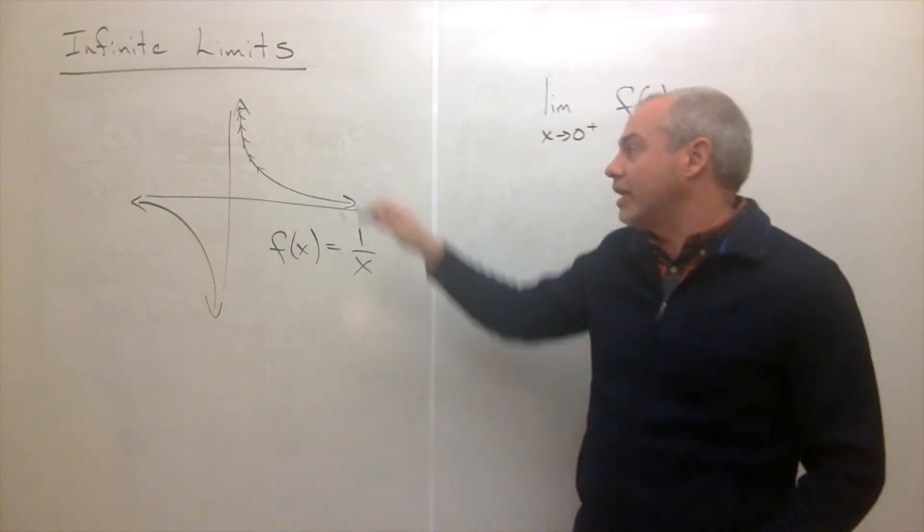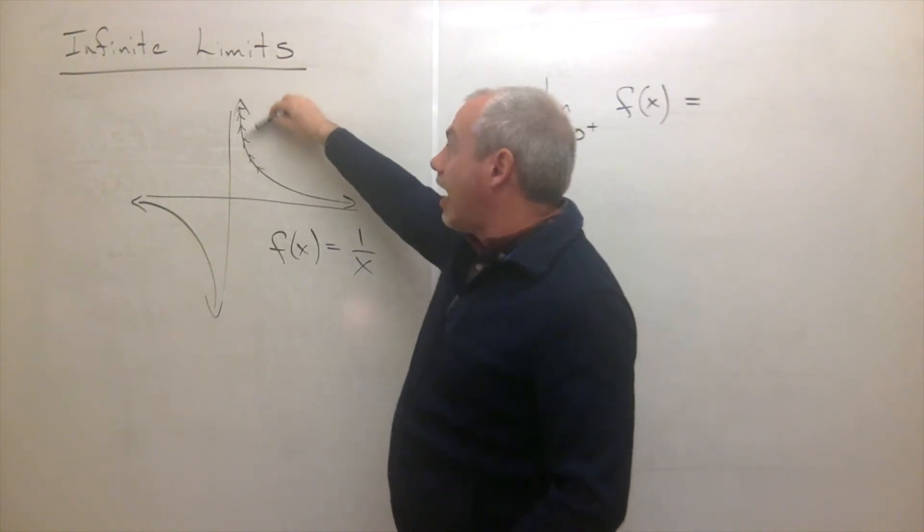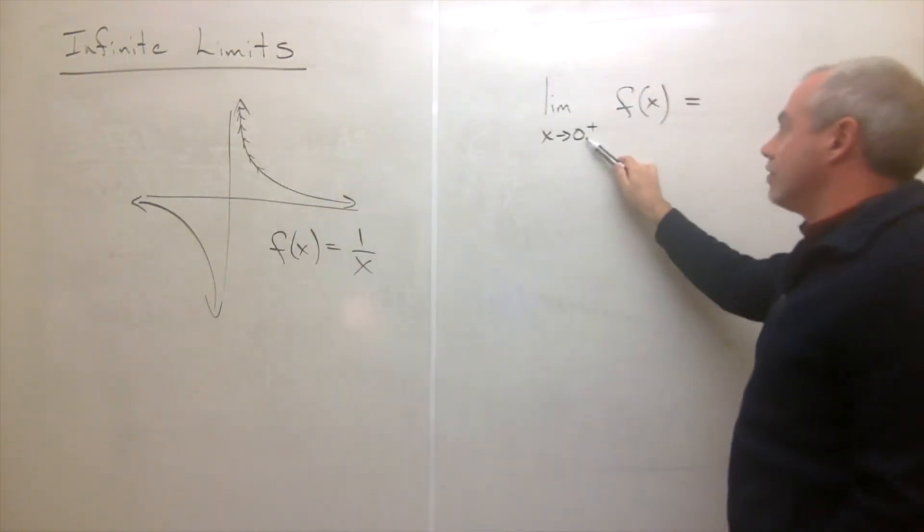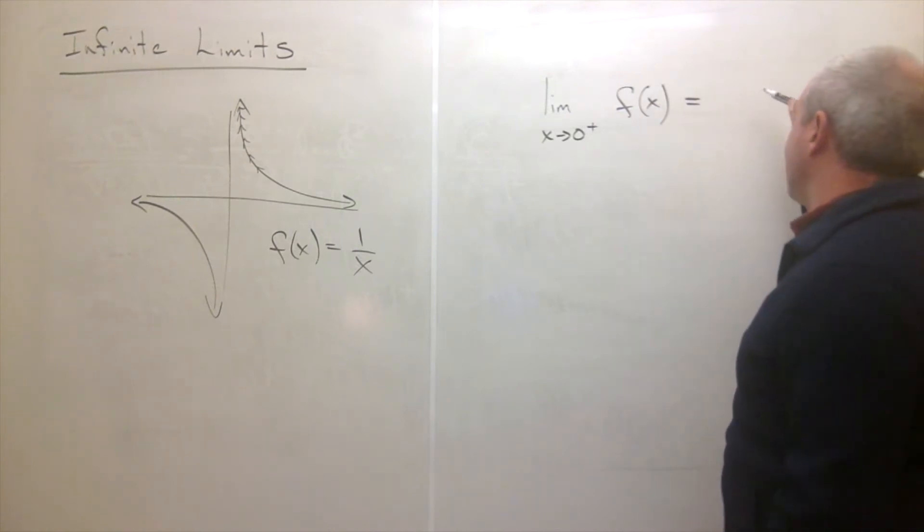And when this happens, when it's going off to infinity, then we say that the limit as x goes to 0 from the right of f(x) is equal to infinity.